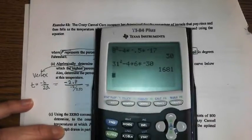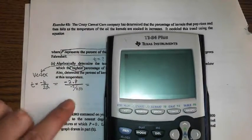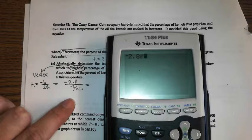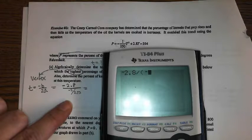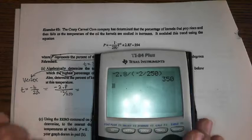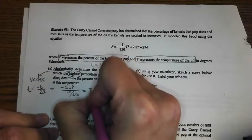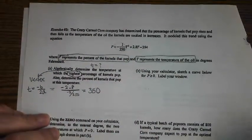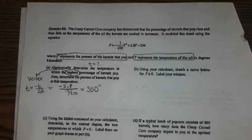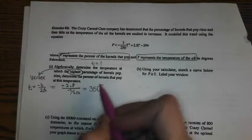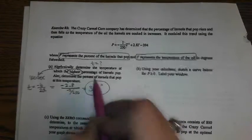And just watch me on my calculator, make sure I type this in correct. Negative 2.8 divided by, when you divide by a fraction, keep your fraction in parentheses, negative 2 over 250. And I get 350. So, the temperature at which I will get the highest percentage is 350. That's the first answer. Determine the temperature. Got it.